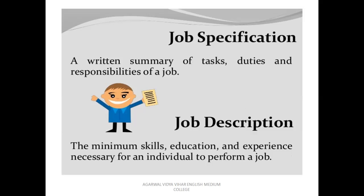The second type of information is about the qualities and qualifications desired for satisfactory performance of the job. Minimum skills, education, and experience necessary for satisfactory performance of the job is known as job description. Job analysis means job specification plus job description. If any analysis is able to answer these two questions, that analysis is known as job analysis. If the meaning is clear, then the other things — objectives and importance of job analysis — will be very easy for you.